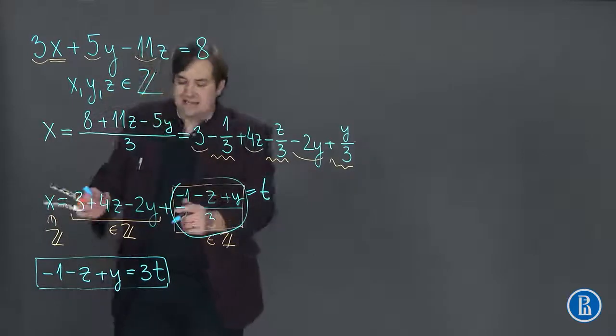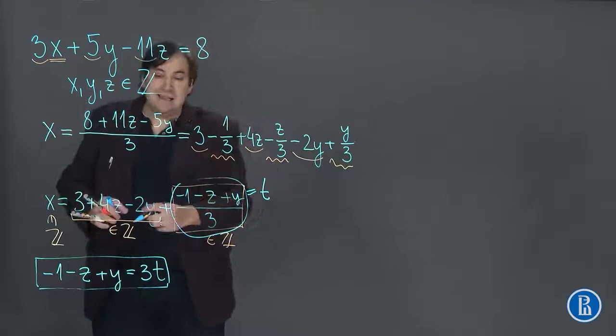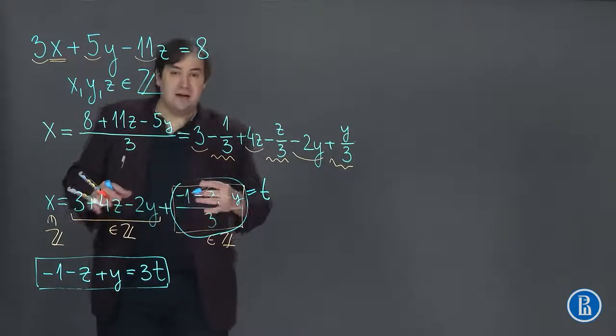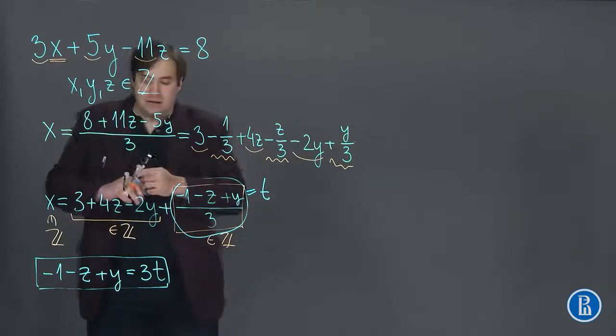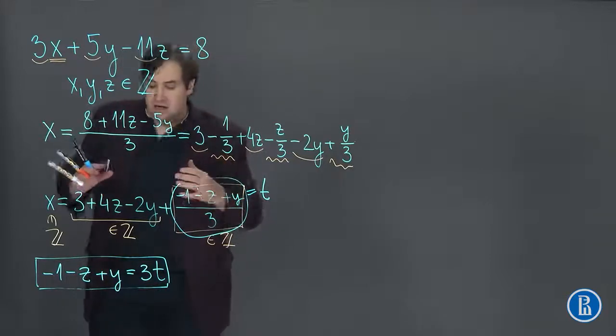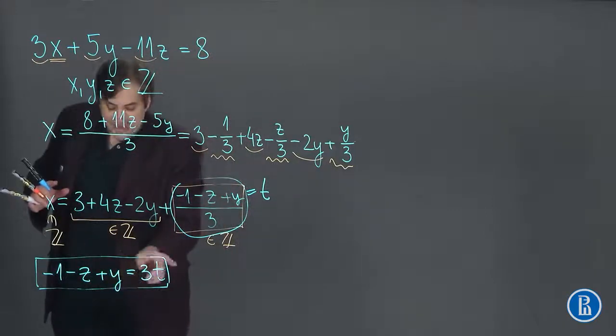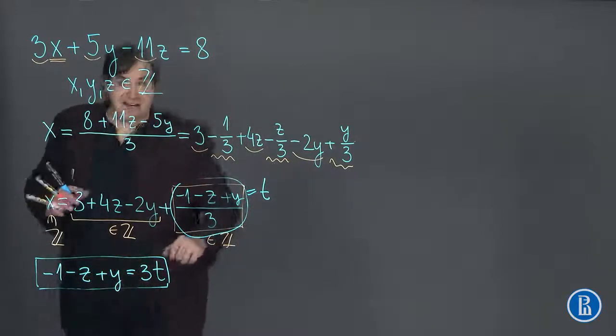Here we can take this equation and repeat the same procedure and gain another equation and another and another. And we will stop when one of the coefficients will be equal to 1. We see that in this equation two coefficients are equal to 1.